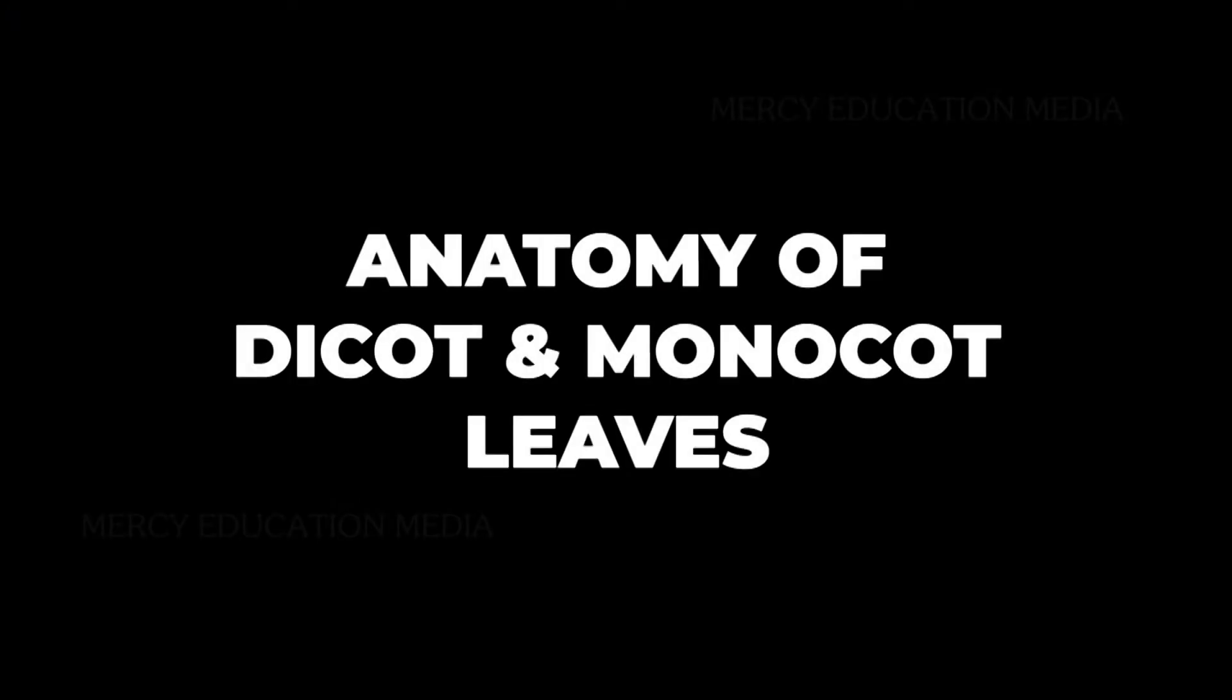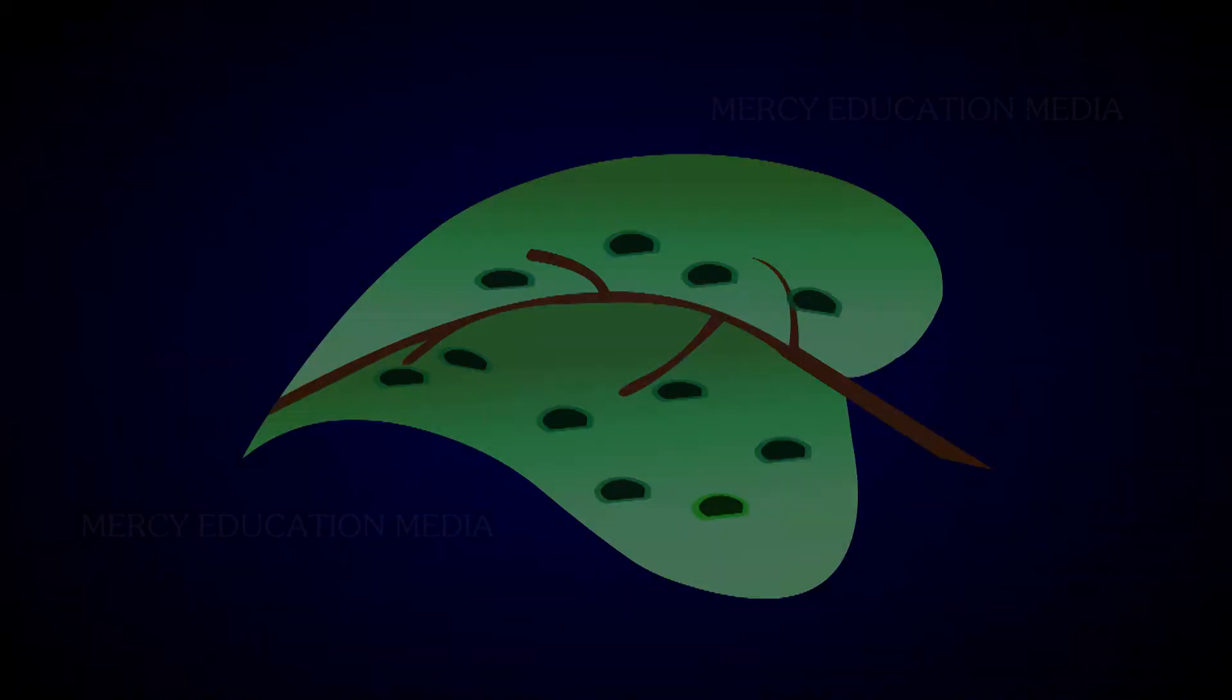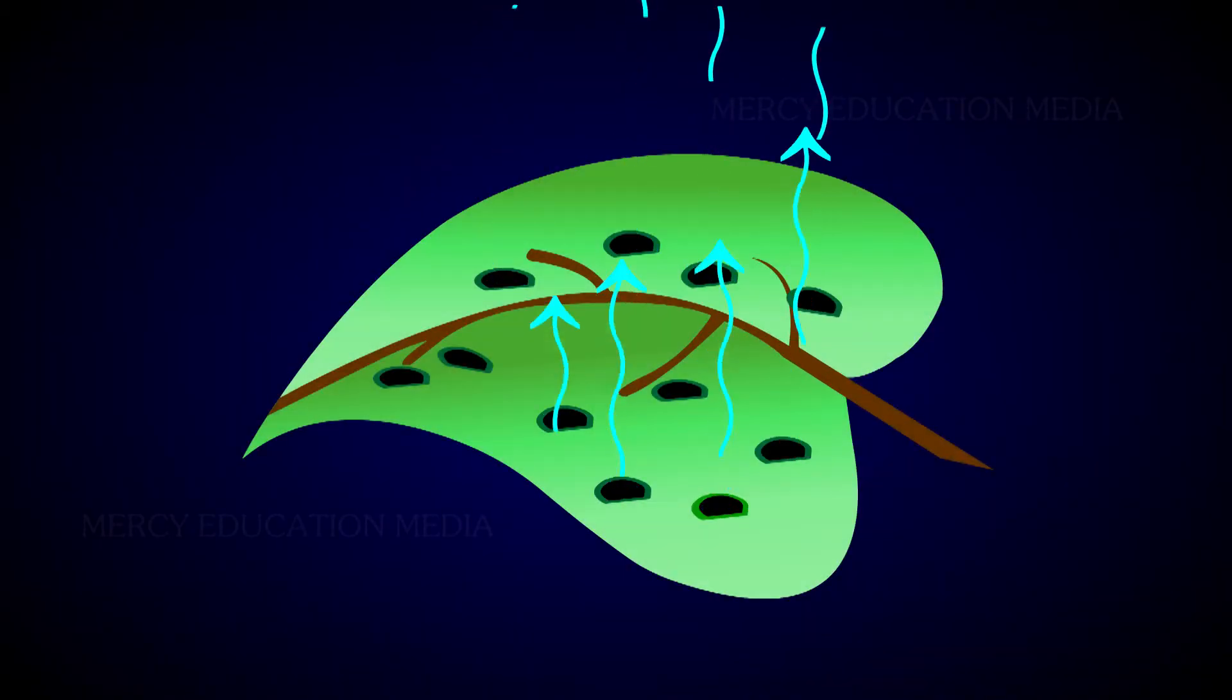Let us see the anatomy of a dicot and monocot leaf. Leaves are very important vegetative organs because they are mainly concerned with photosynthesis and transpiration.